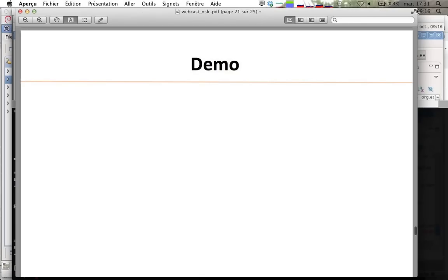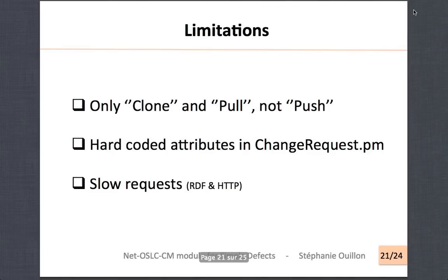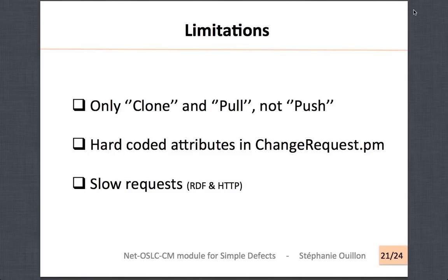Some information about the current state of the Perl module: you can only clone or pull — you can't push at the moment. Just remember, it's an early version of the module. As I said, the attributes in change requests are hard-coded so it's not very flexible, and the requests are a bit slow. I think it's coming from both RDF and HTTP, so it could be improved.